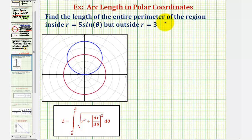We want to find the length of the entire perimeter of the region inside r equals five sine theta, graphed here in blue, but outside r equals three, graphed here in red.